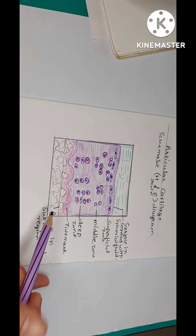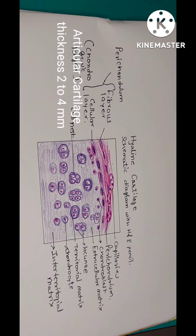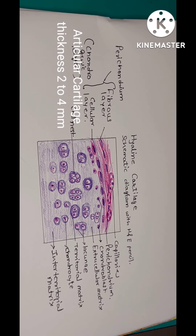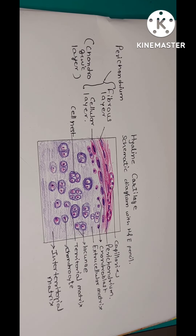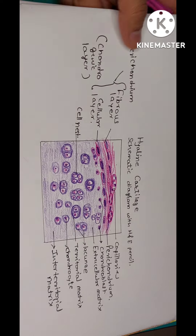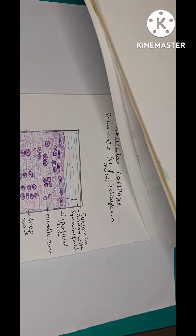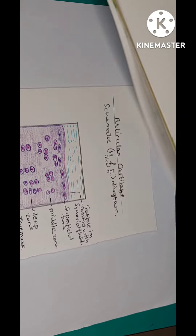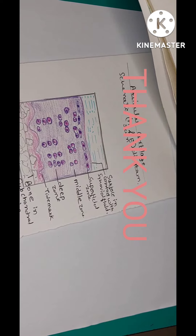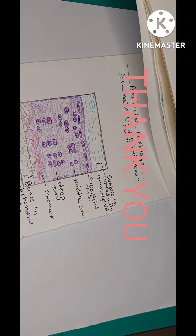Articular cartilage thickness is around 2 to 4 millimeters. This is about the hyaline cartilage and articular cartilage. Thank you.